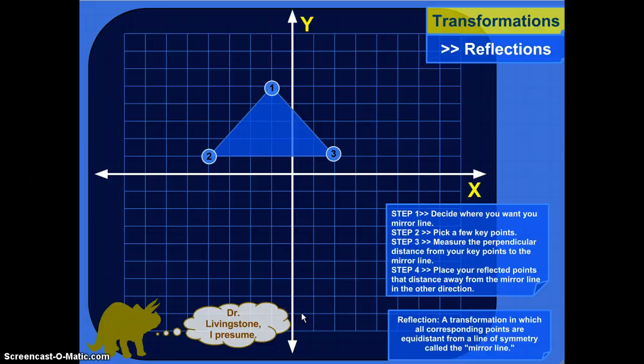Alright, now let's do a couple of reflections now that we've looked at what the concept is. How do you actually reflect a shape? Let's start with this triangle. It's a pretty simple one. And here's the basic process.